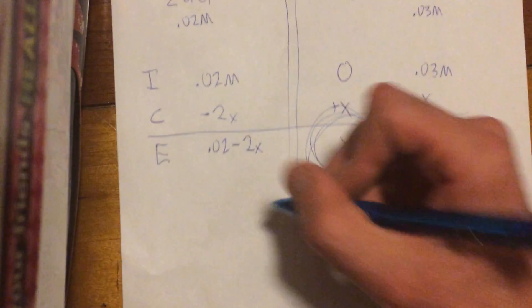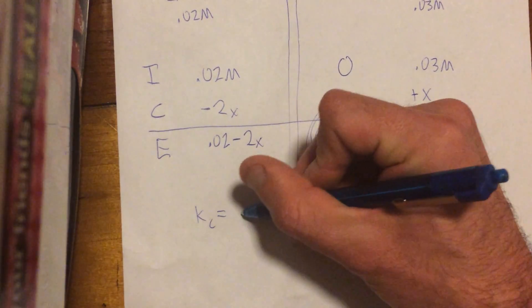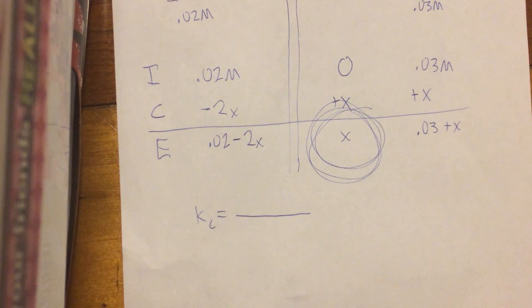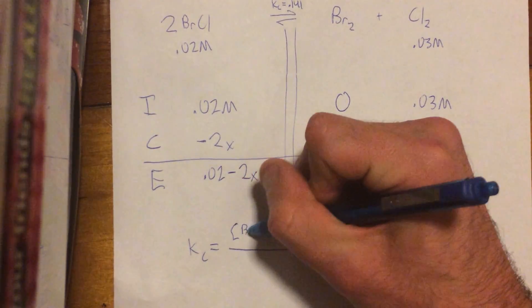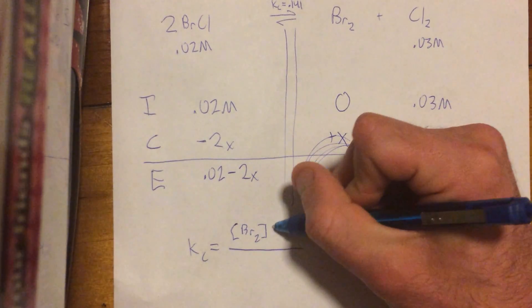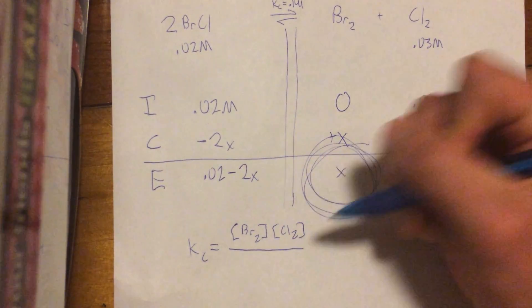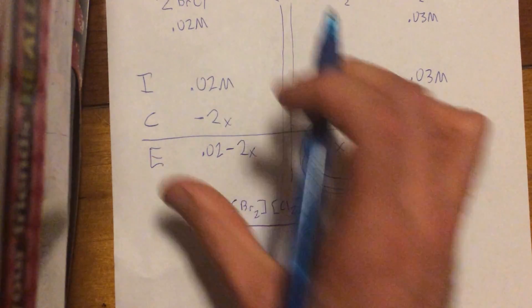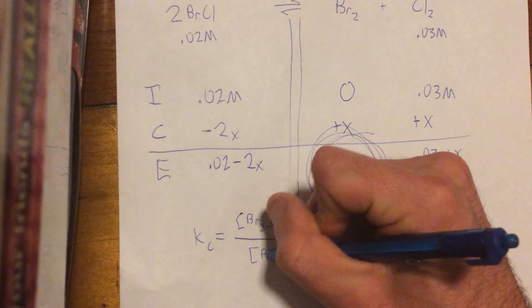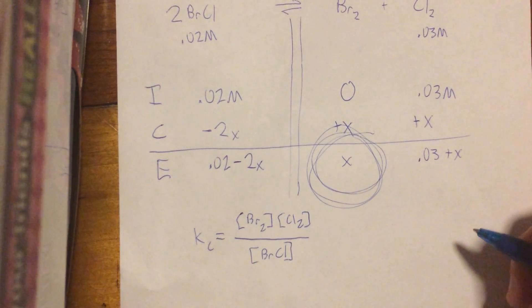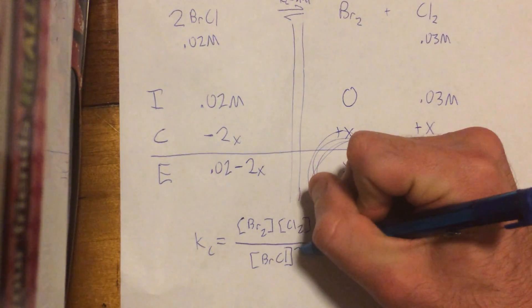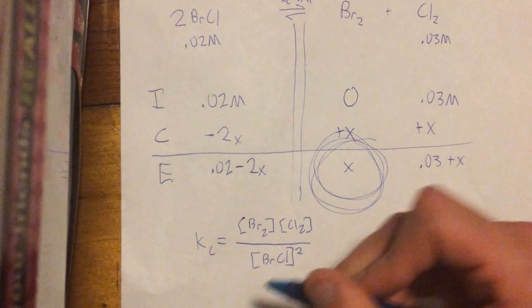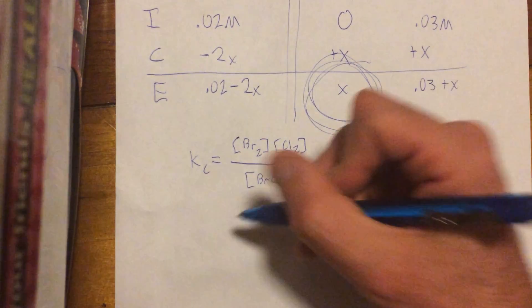So next, we will do the Kc equals, and you'll remember this as the mass action equation where you put the products over the reactants. So in this case, we have Br2, and then you have Cl2, that's the products. And now we do the reactants, which is BrCl. But then also, look, there's a coefficient of 2. So, we're going to put, we're going to square all that right there. Easy enough.